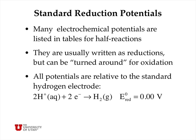Many electrochemical potentials are listed in tables, for example in the CRC tables of chemistry and physics, for half-reactions. They're usually written as reductions, but they can be turned around and written as oxidations. When you do that, you have to remember to reverse the algebraic sign of the reduction potential to get the oxidation potential. All these potentials are listed relative to the standard hydrogen electrode, which is the reduction of two protons in aqueous solution to hydrogen gas, arbitrarily assigned a reduction potential of 0.00 volts. Anything more easily reduced is given a higher, positive reduction potential, and anything less easily reduced or more easily oxidized is given a negative reduction potential or a positive oxidation potential.